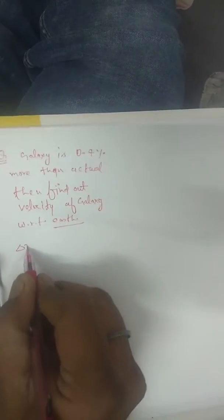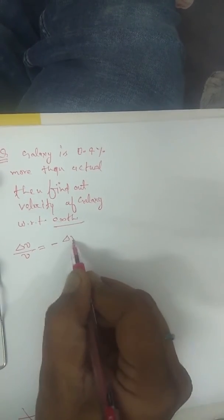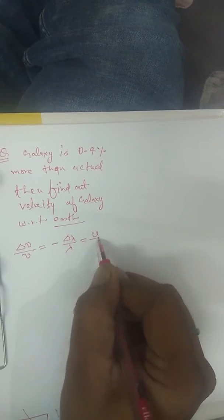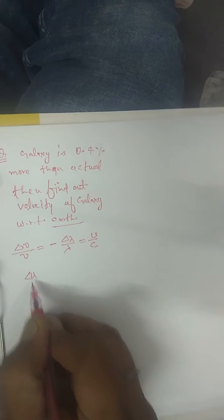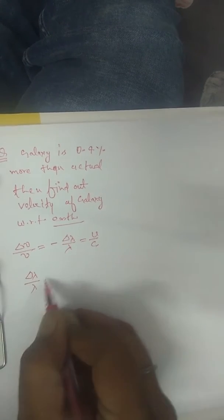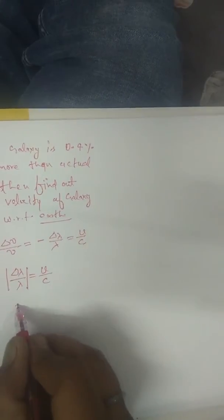We can do it. Delta nu upon nu equals to minus delta lambda upon lambda equals to v upon c. So delta lambda upon lambda magnitude is equals to v upon c.